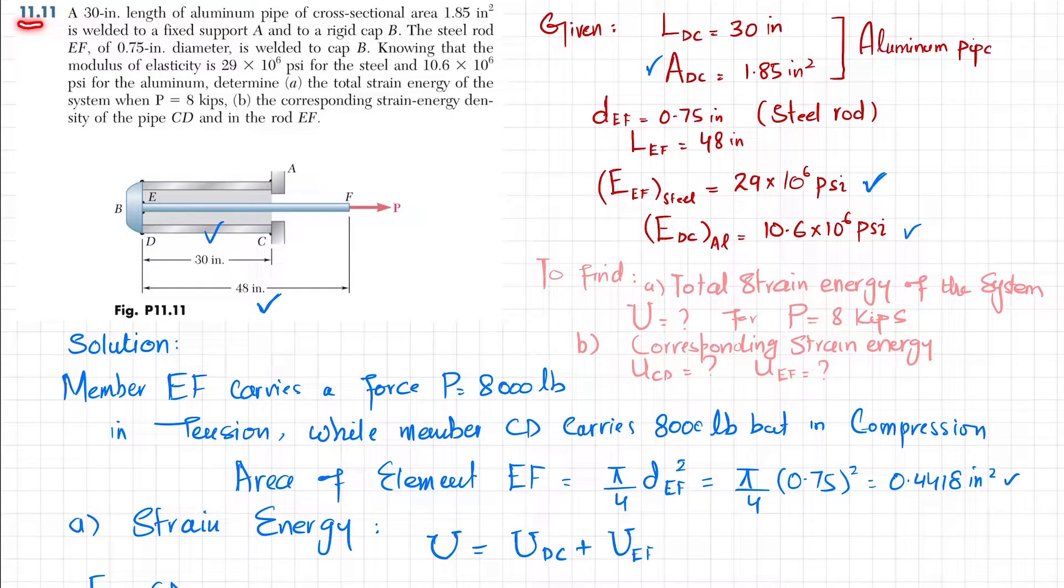Welcome back to Problem 11.11. I'm going to explain this problem. I have recorded this before but there was an error, so I am re-recording it. A 30-inch length of aluminum pipe of cross-sectional area 1.85 square inches is welded to a fixed support A and to a rigid cap B.